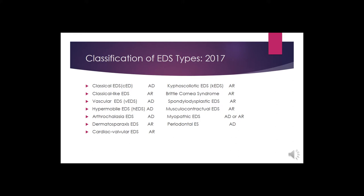The 2017 International Symposium classification shows 13 different types, with letters indicating autosomal dominant or recessive inheritance. Twelve have genetic testing to verify them. Ten of those 13 are very rare and most geneticists will never see them. Of the remaining three — classic EDS, vascular EDS, and hypermobile EDS — hypermobile EDS accounts for probably 80% of cases, making it by far the most common type.